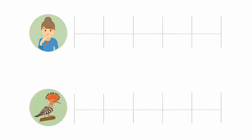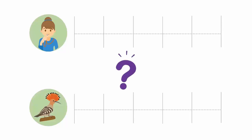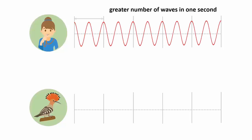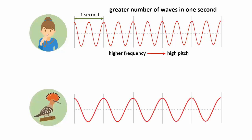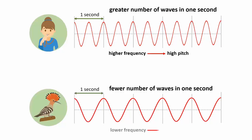Let us consider two more examples: the blowing of a whistle and the call of a hoopoe bird. Which of these two actions will produce a higher pitch? In the case of blowing a whistle, a greater number of waves pass in one second, meaning it has a high frequency, which results in a high-pitched sound. In the case of a hoopoe bird, however, fewer waves pass in one second, resulting in a low-pitched sound.